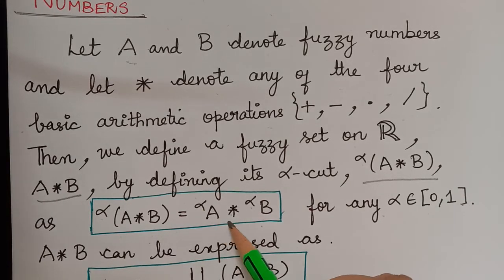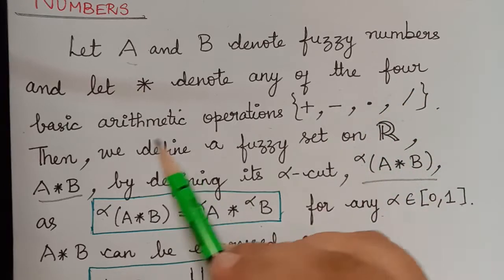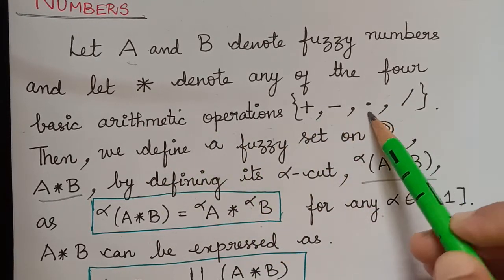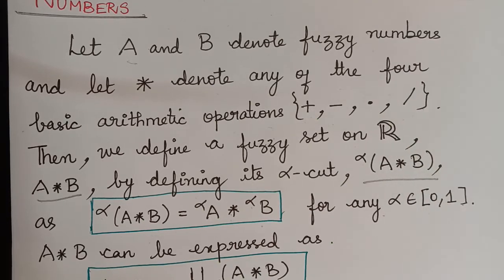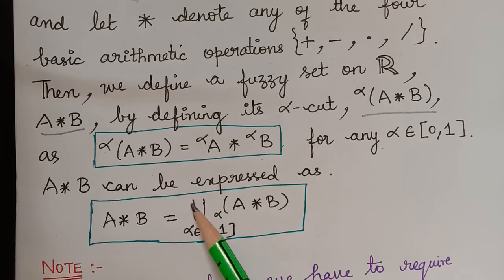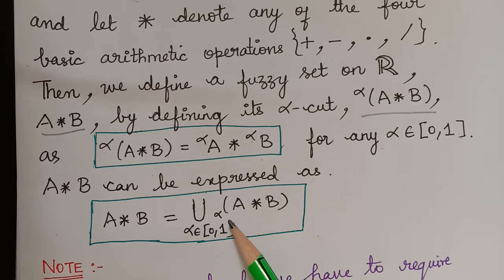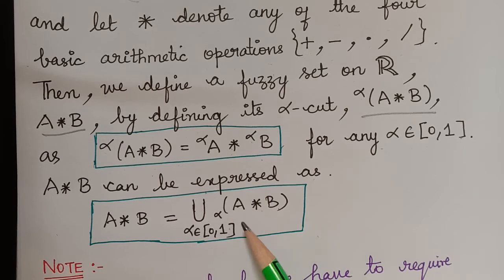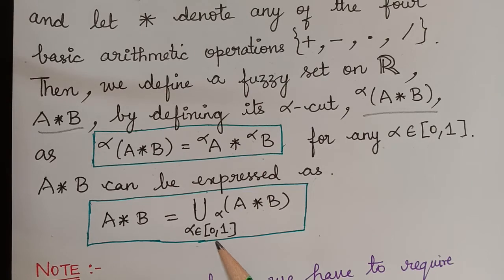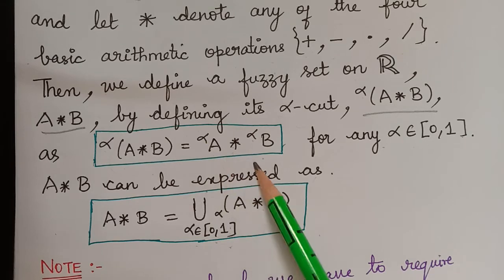This star will be any one of the four arithmetic operations: plus, minus, multiplication, or division. And A star B can be expressed as the union of the special fuzzy set A star B, where alpha is an element of the closed interval [0,1]. Based on this, we will be developing the fuzzy arithmetic.